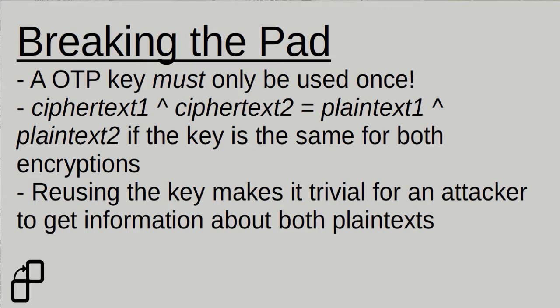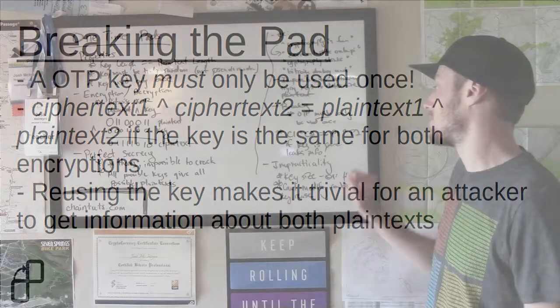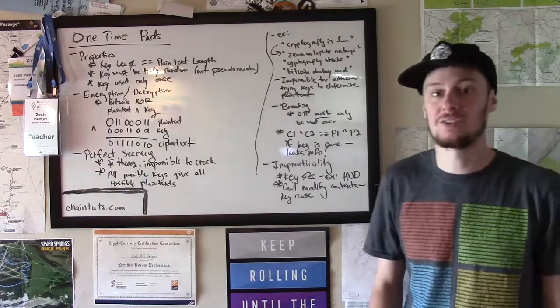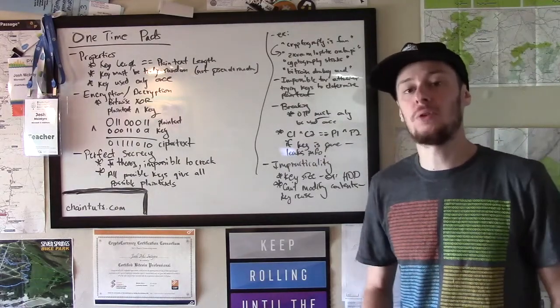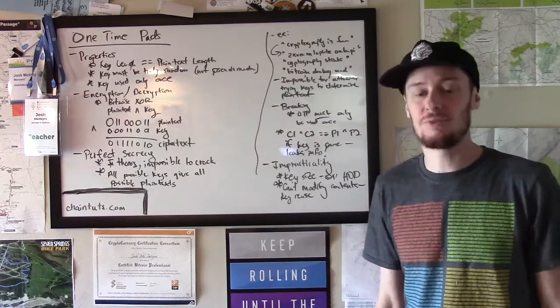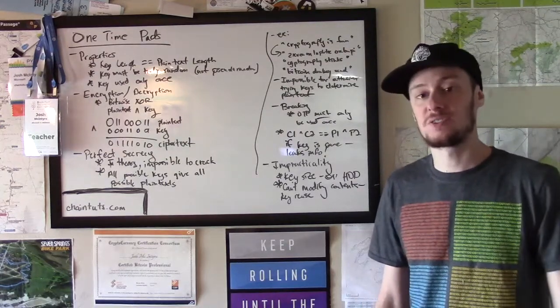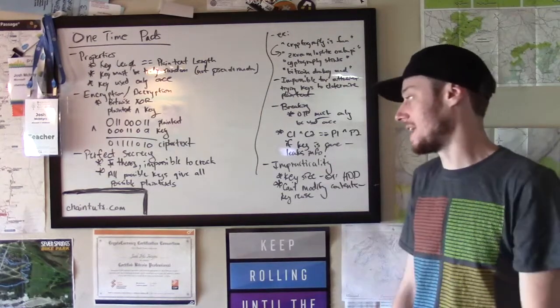This property is that the first ciphertext, so your first encrypted message, XOR with your second ciphertext gives the first plaintext XOR with the second plaintext. So the things will still be scrambled a little bit, but you will be leaking information about your plaintexts if you reuse the key.